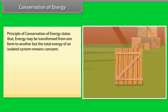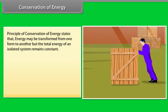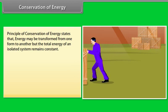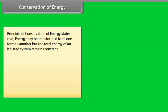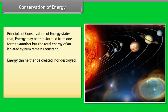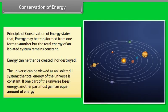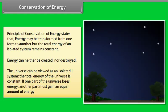Conservation of energy. Principle of conservation of energy states that energy may be transformed from one form to another, but the total energy of an isolated system remains constant. Energy can neither be created nor be destroyed. The universe can be viewed as an isolated system. The total energy of the universe is constant. If one part of the universe loses energy, another part must gain an equal amount of energy.